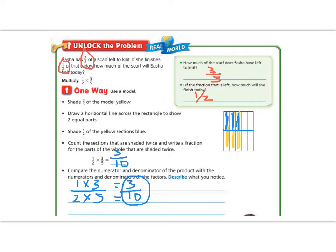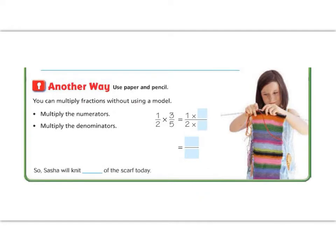Let's practice this in another way. You can multiply fractions without using a model. First we multiply the numerators, then we multiply the denominators. In this example, I have one half times three fifths. They've already given us the one half. We need to fill in the three fifths. Then one times three is three, and two times five is ten. So Sasha will knit three tenths of the scarf today. Notice that my number got smaller because I'm multiplying by less than one.